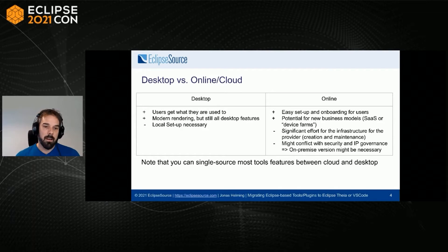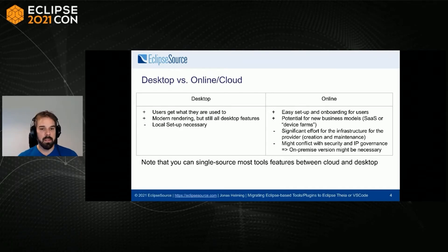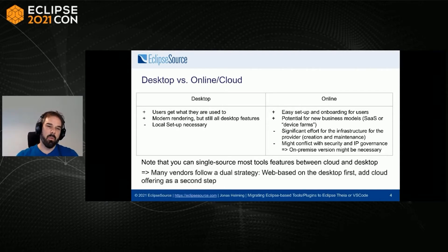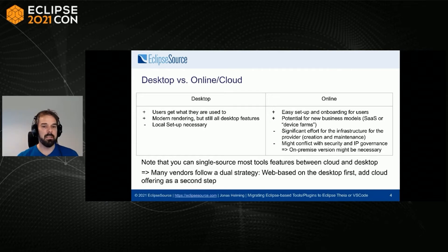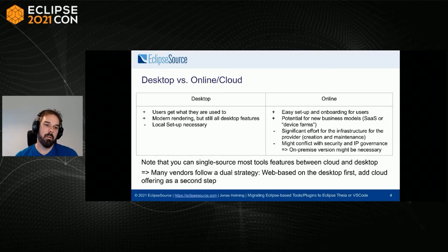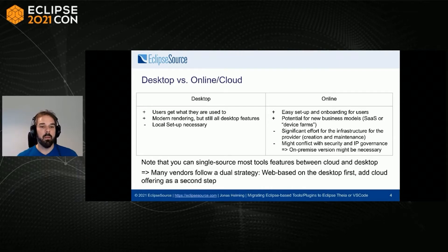It's worth noting that with this architecture, you can single-source most tool features — develop in a way that deploys both on the desktop and in a cloud version. As a consequence, many vendors follow a dual strategy: they aim at a web-based tool on the desktop, still provided as a desktop tool, and then in parallel start building a cloud offering they might deploy later. VS Code did a similar thing — first a desktop tool prepared to run in the cloud, and then recently the online version.